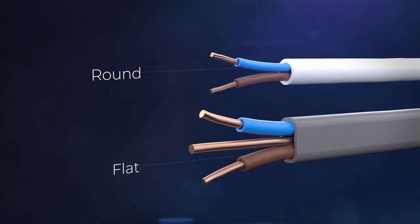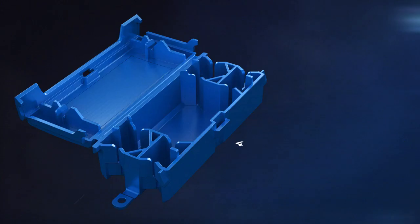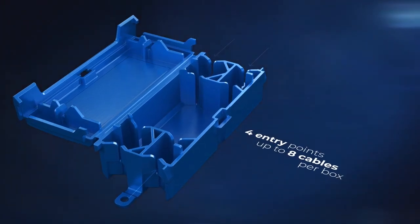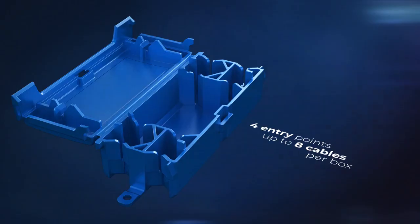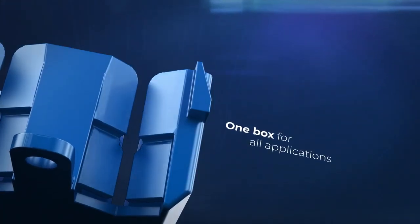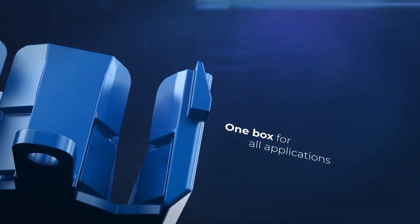The Insure Box is designed for both power and lighting, with four entry points and fitting up to eight cables per box. Its versatility means there is no need to carry multiple box types for different applications.